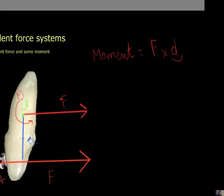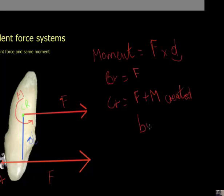which is the moment. So the equivalent force system at bracket equals F and at CR equals F plus the moment created by F.